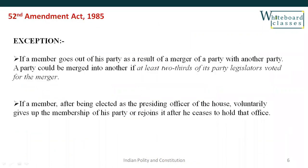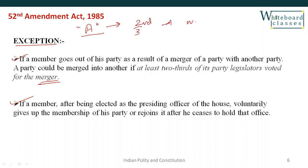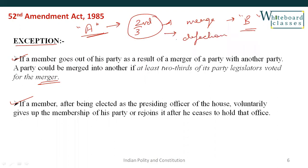Next are the exceptions — there are two exceptions where defection will not lead to disqualification under this law. The first exception is merger. For example, if two-thirds of members of political party A decide to merge with another political party B, those two-thirds members who are merging will not be considered defectors.